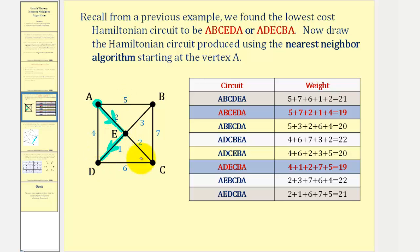From E, we only have two choices, not three. We can't go to C because if we do, we would not be able to visit vertex B and D and return to A without using a vertex more than once. So we can go from E to B with a weight of three, or from E to D with a weight of one. Since one is less than three, we'll go from E to D.